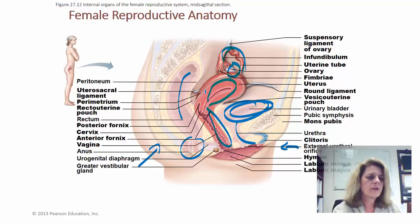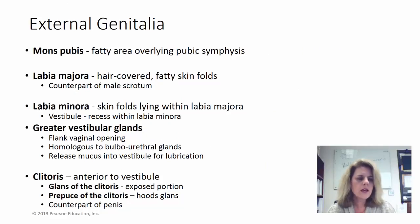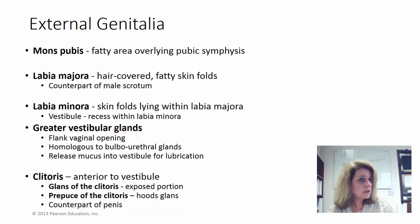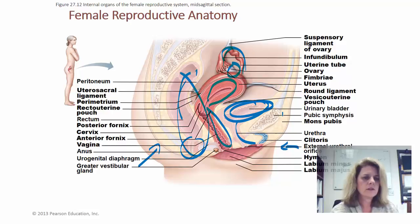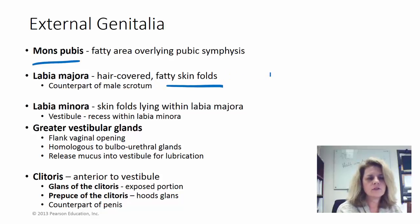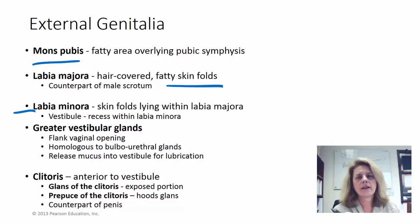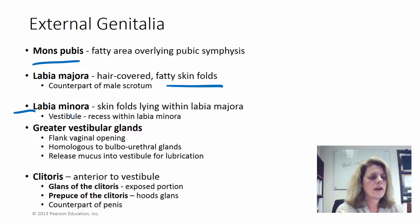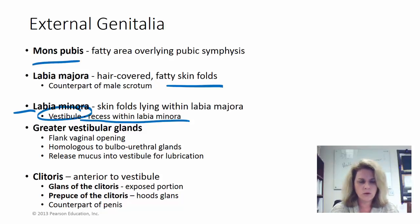We're going to start from the outside with the external genitalia, which includes the mons pubis, labia majora, labia minora, vestibular glands, and clitoris. The mons pubis is a fatty area overlying the pubic bone. The labia — literally meaning lips — are coverings of the female genitalia. The labia majora are flesh-colored fatty skin folds, usually with hair, and are the counterpart of the male scrotum. The space between the labia minora is called the vestibule.